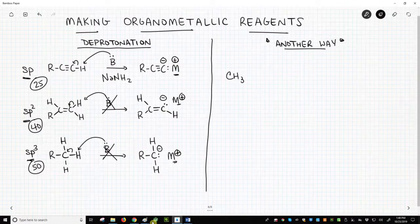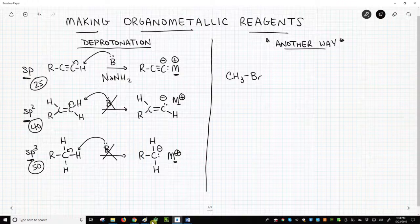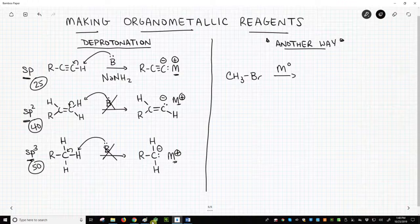Let's do something simple. A nice SP3 bromomethane. We will treat this molecule and its carbon-halogen bond with a metal – a metal in its zero oxidation state. For many metals,